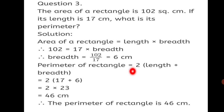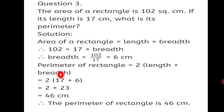Now, perimeter of rectangle is equal to 2 times (length plus breadth). In this sum, we use the area of rectangle formula first, and then the perimeter of rectangle formula — which you already used in Practice Set 44. Substituting: 2 times (17 plus 6). Add first: 17 plus 6 is 23. So 2 into 23 gives you 46 centimeters. Therefore, the perimeter of the rectangle is 46 centimeters.